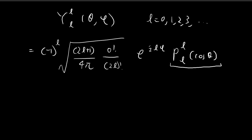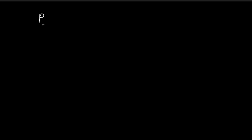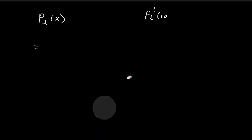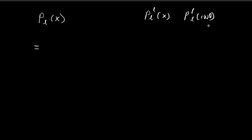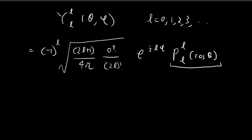Now we focus on deriving the associated Legendre polynomial. We're going to find P_L(x) first, then use that to find P_L^L(x), and then find P_L^L(cosθ). We can then substitute this term back into the expression to construct Y_L^L.